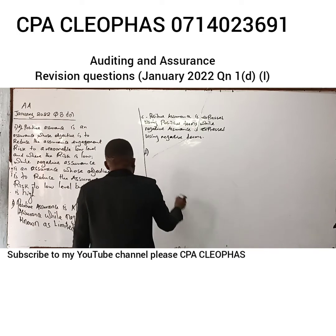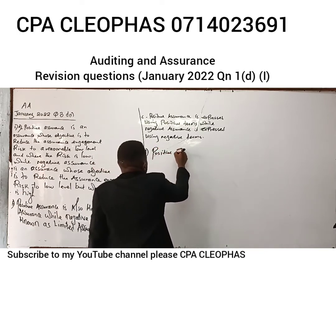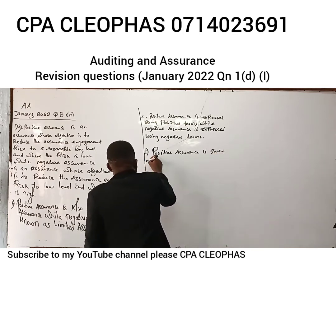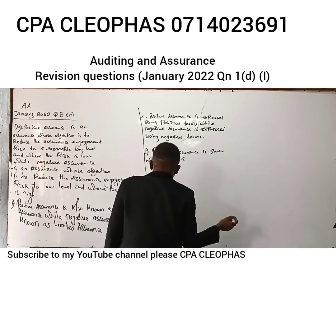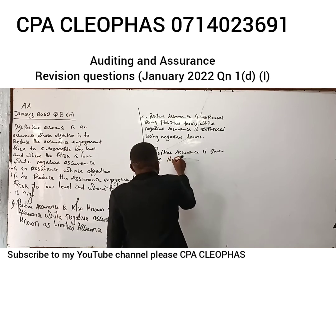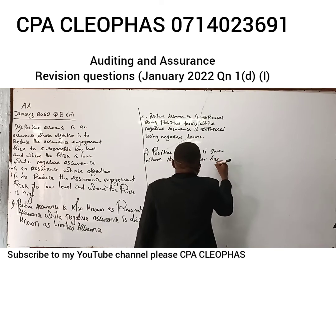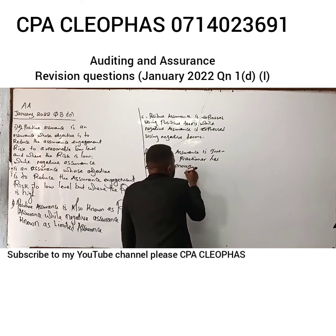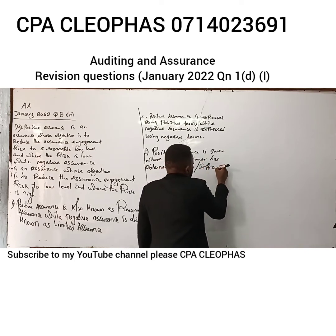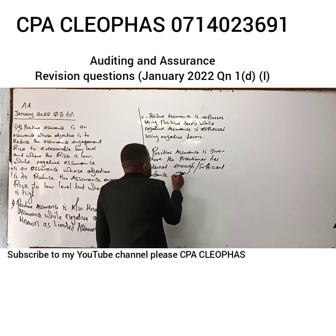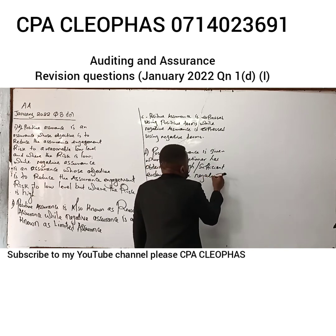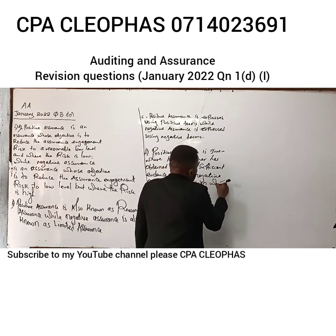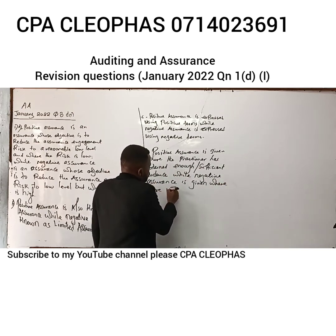Additionally, positive assurance is given where the practitioner has obtained sufficient evidence, while negative assurance is given where there is a scope limitation.